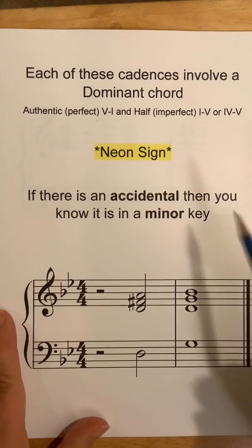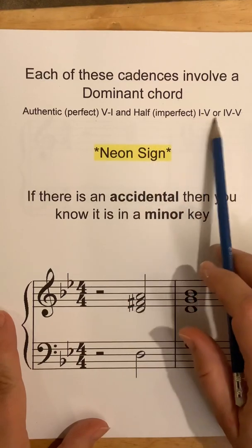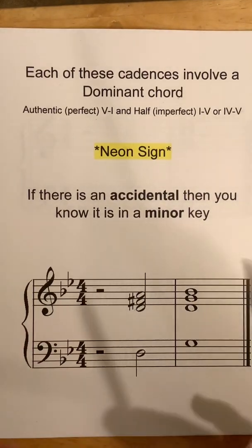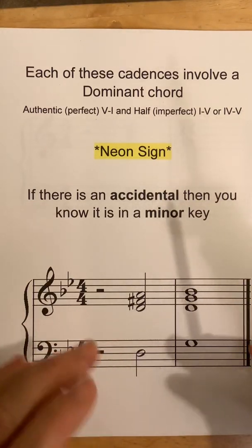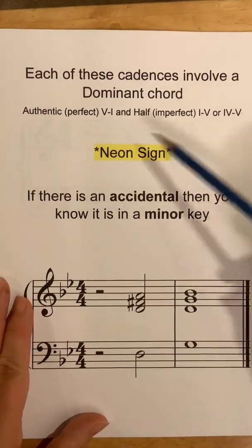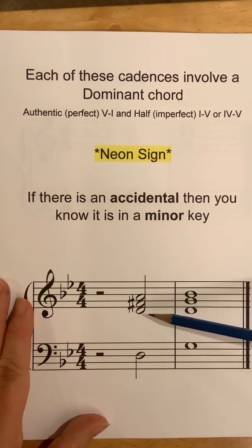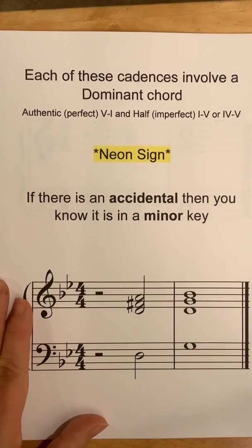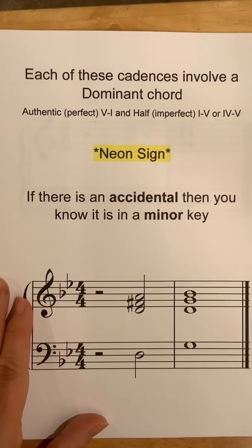Each of these cadences involves a dominant chord. The authentic or perfect is 5 to 1, and the half cadences both go to 5. I'll talk about a neon sign in your head: if there is an accidental — because this is identification, and you're going to be given a cadence — it's going to be a minor key, because we're using harmonic minor and the dominant triad in a minor key always has to raise the leading note. So if there's an accidental, it makes it easier — it's a minor key.